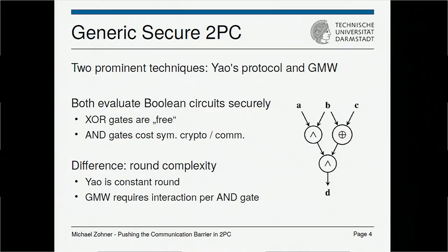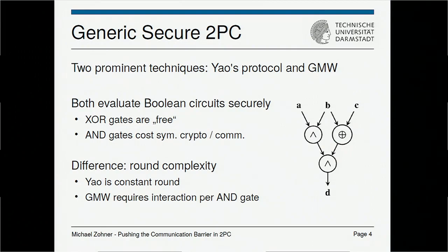The difference between the GMW protocol and Yao's Garbled Circuits is round complexity. For Yao's Garbled Circuits it's constant round — you send a lot of data at once and the other party does the computation. For the GMW protocol, you have to perform interaction for each AND gate, meaning communication rounds linear in the number of AND layers, since you can batch communication for ANDs on the same layer.